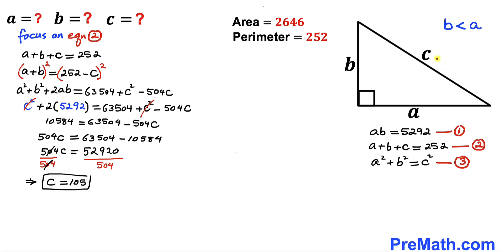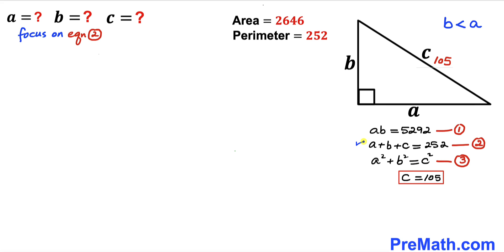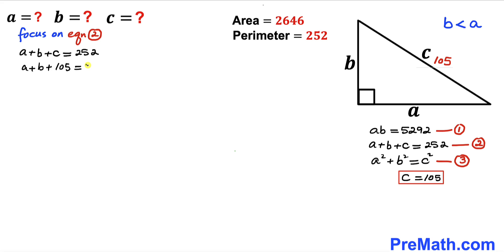So C equals 105. Now let's go back to equation two. Replacing C with 105, we have A plus B plus 105 equals 252. Subtracting 105 from both sides, our A plus B value turns out to be 147.